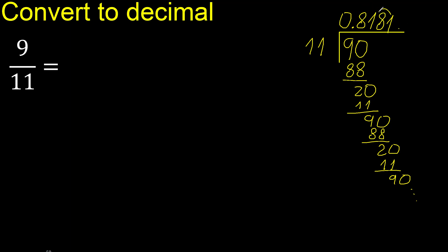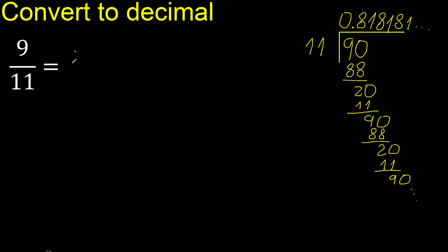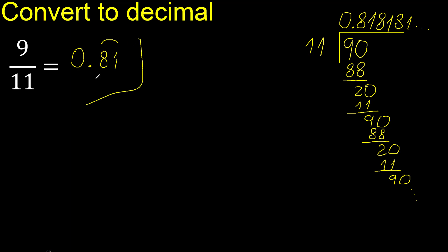The digits 81 repeat — 81, 81, repeat. After the point: 81, repeat 81, repeat. Like this. So the answer is 0.818181... with 81 repeating.